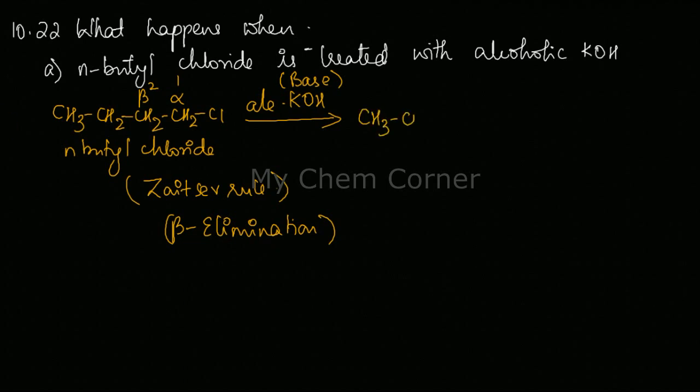you are going to form butene as your product with elimination of KCl and H2O. So the hydrogen that came out from here will bond with OH to give H2O. Cl minus will go with K to form KCl. So you will form an alkene, in this case butene, as your product.